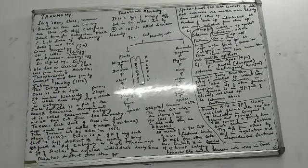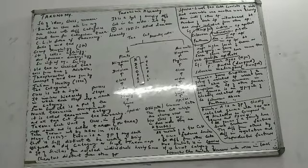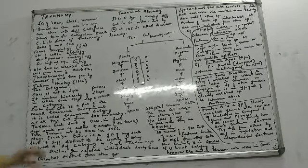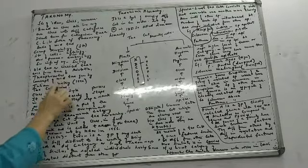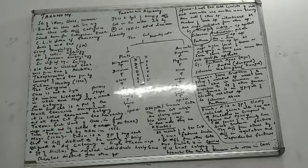Two main people associated with classical taxonomy are Aristotle and Theophrastus. Classical taxonomy slowly vanished with the development of more knowledge, and then we had modern taxonomy. The concept of modern taxonomy was given by Julian Huxley — J-U-L-I-A-N Huxley — in 1940.